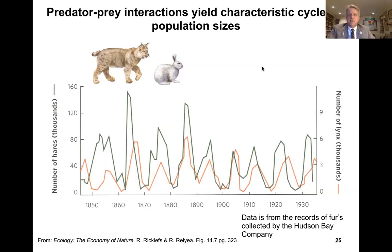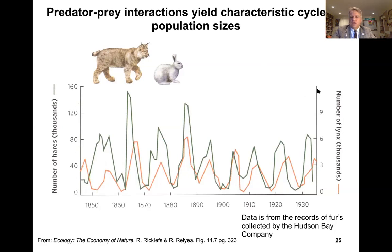This is the famous lynx-and-hare example you probably encountered in high school biology. The data — noting the time from the midpoint of the 19th century through the mid-1930s — come from fur records collected by the Hudson Bay Company. Looking at the y-axis: the number of hares in thousands and lynx in thousands in orange. When we have a high population of lynx we have a low population of hare, followed by a decline of the lynx population with an increase in the hare. This cycle repeats through almost a century.